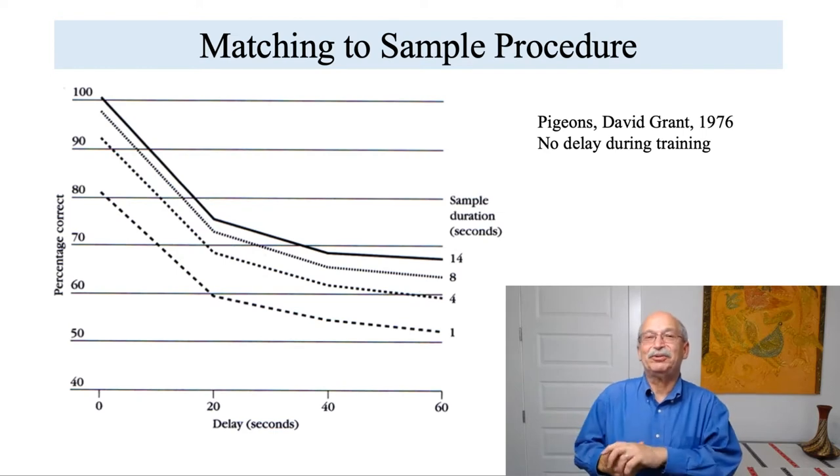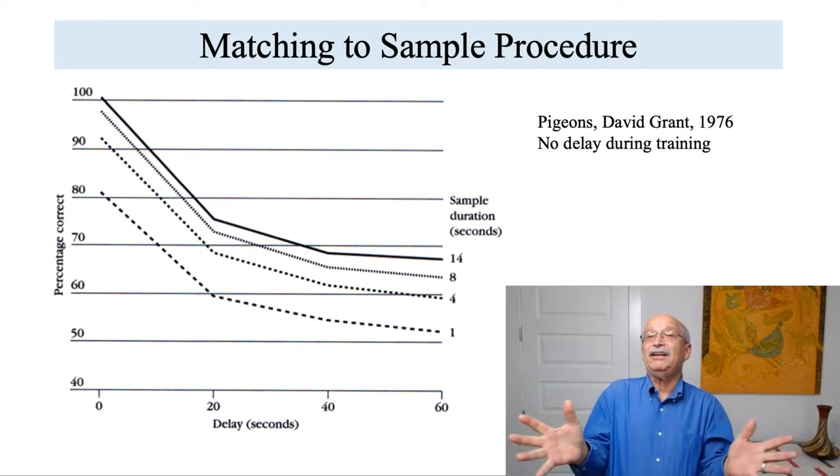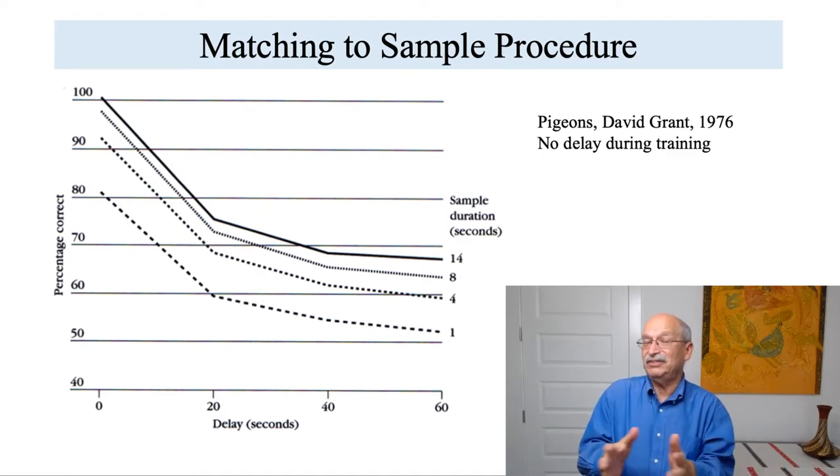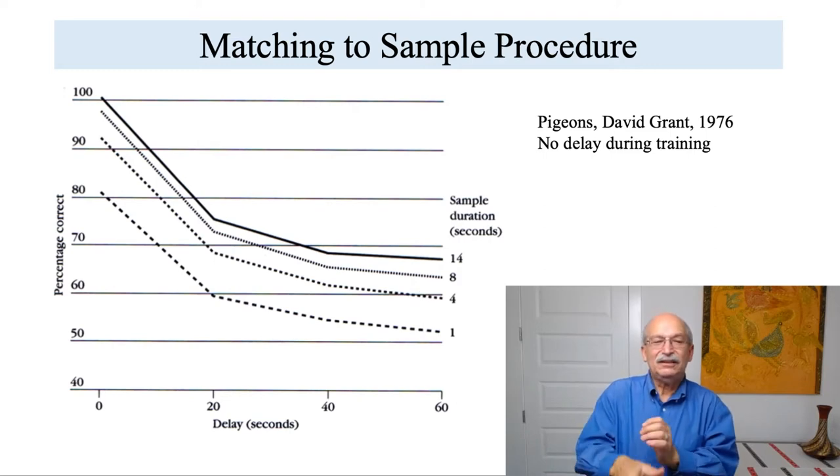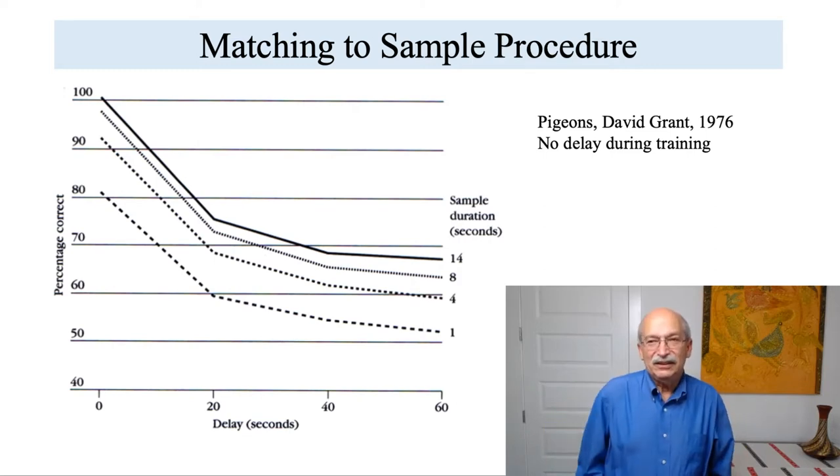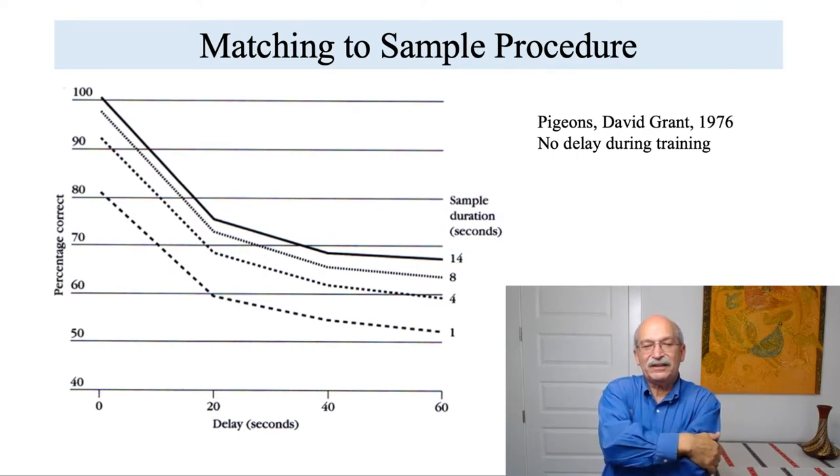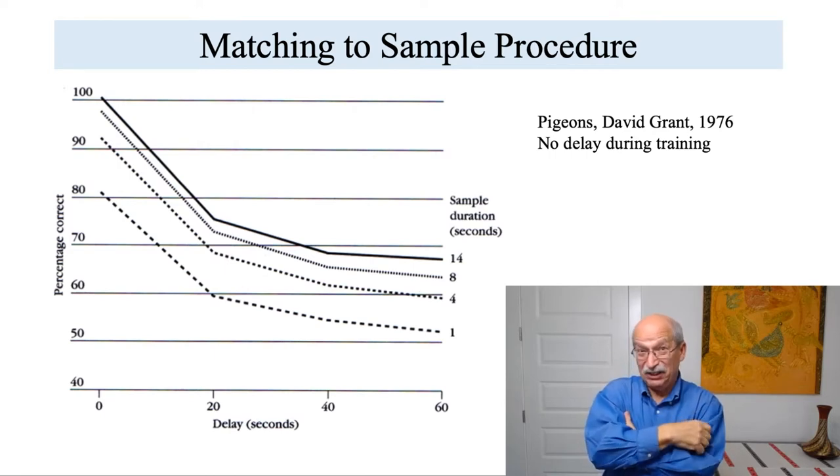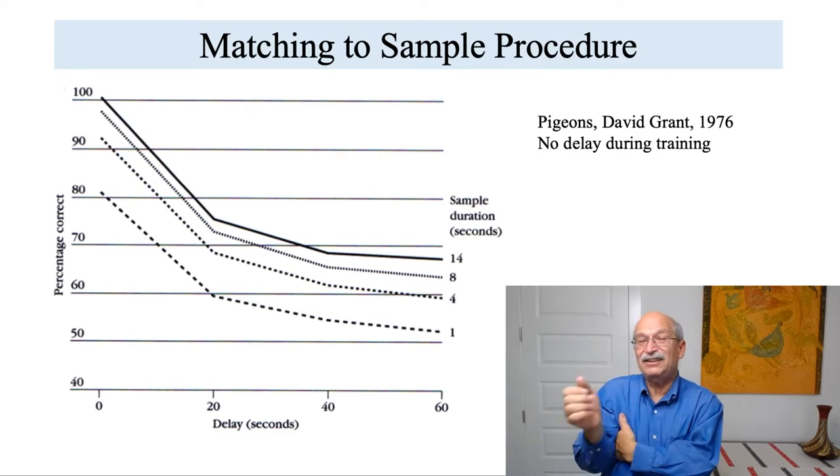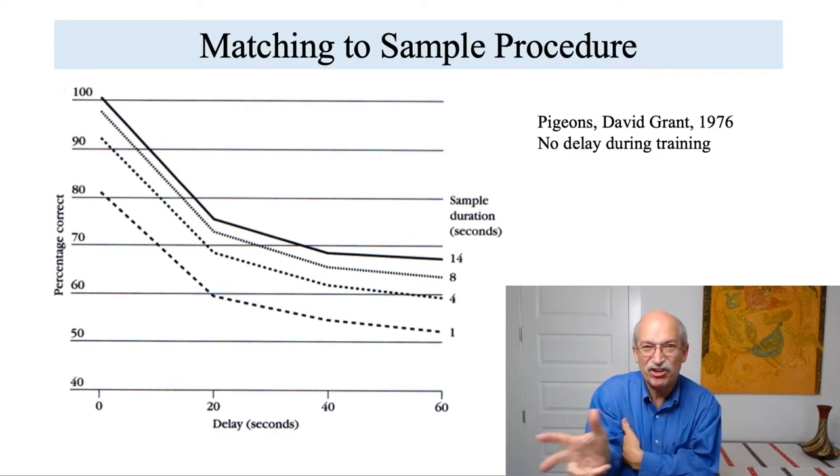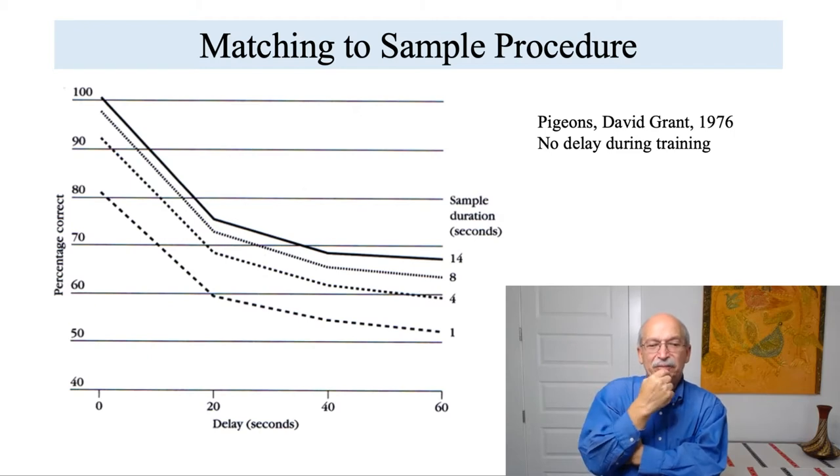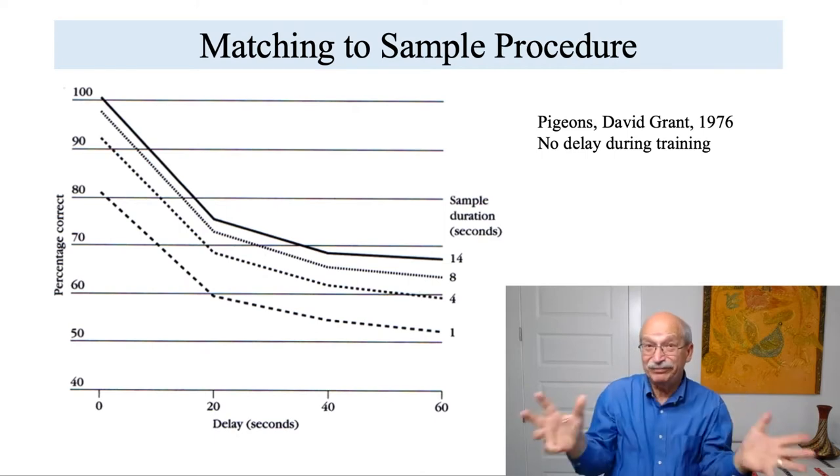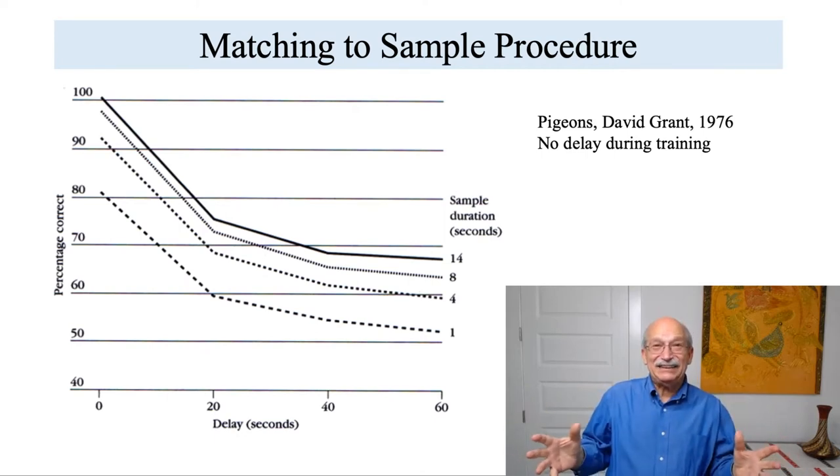He presented the sample stimulus and then varied the delay interval between zero and 60 seconds before he presented the choice stimulus to see how the delay affected the choice performance. And you got what is typical memory loss decay kind of data. The longer the delay interval, the worse the performance. And so this seems to suggest perhaps memory decay is inevitable.